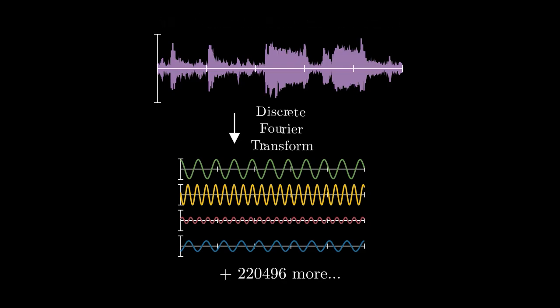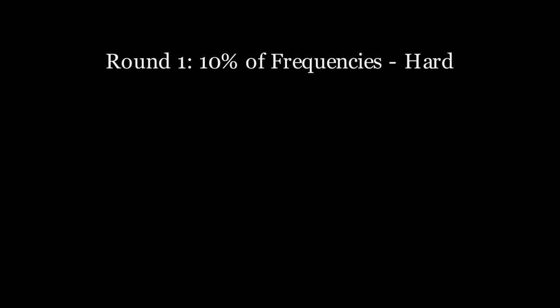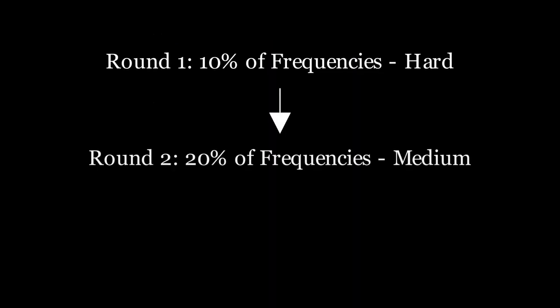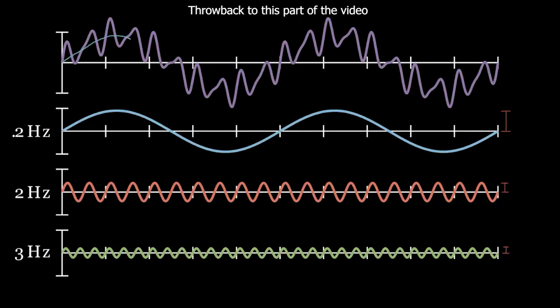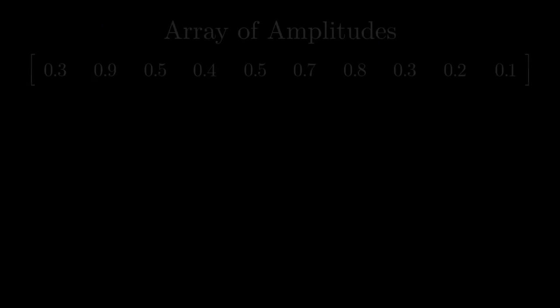We could just combine all these individual waves back together using the uno-reverse Fourier transform, also known as the inverse Fourier transform, but that would just create the original song. For the song Guessing Game, we want to filter the data such that we only use a certain percentage of these frequencies.